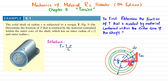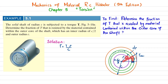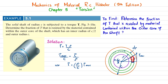From the linear distribution diagram, τ_max / c = τ / ρ, so the shear stress on the small element is τ = (ρ / c) · τ_max. This shear stress is due to a small differential torque, which we call dT.